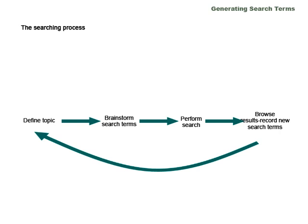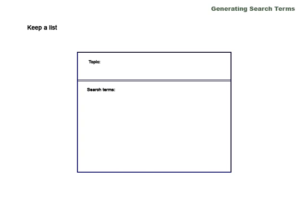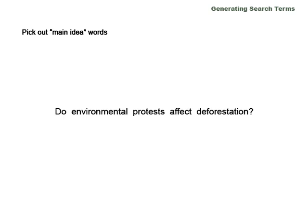Let's look at some methods to brainstorm good search terms. You may find it helpful to keep a written list of search terms, which you can add to as you go along. The first step in brainstorming search terms is to look at your topic sentence and pick out the words that represent the main ideas. These main idea words can be your first search terms — use them to brainstorm synonyms and other search terms to add to your list.